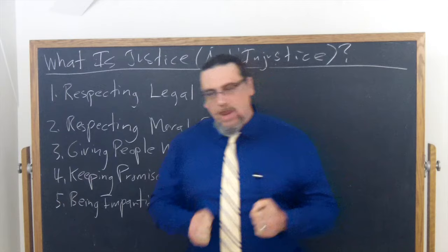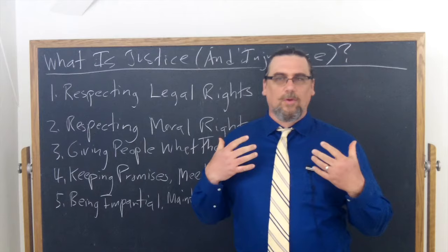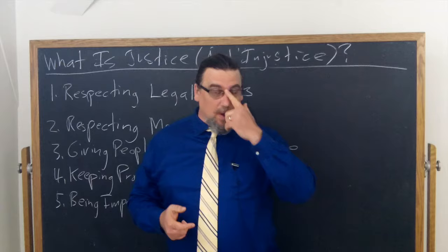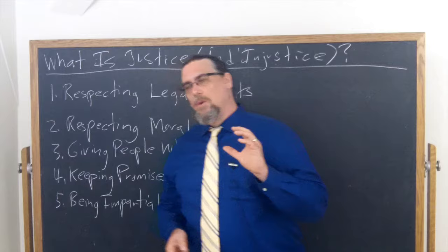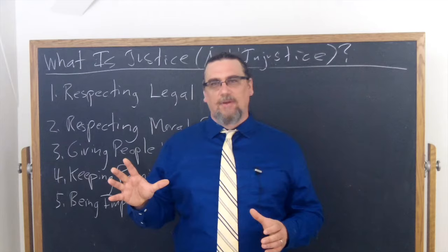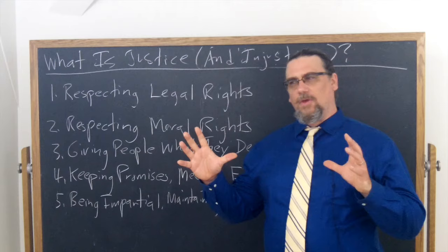In Chapter 5 of Utilitarianism, John Stuart Mill is going to talk about justice and its relationship with the key idea running throughout the entire treatise — that of utility — which has to do with maximizing the positive outcomes and minimizing the negative outcomes for everybody in the community concerned. And the question is whether the notions of justice can map on to those of utility.